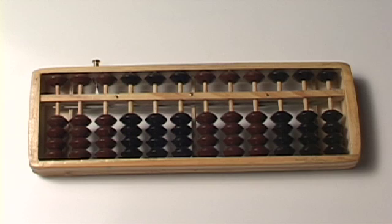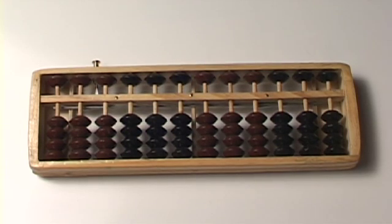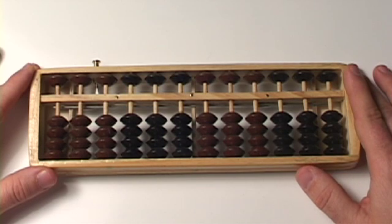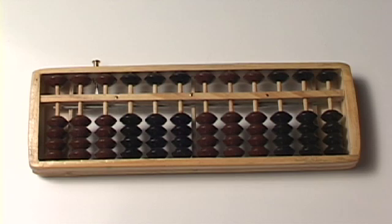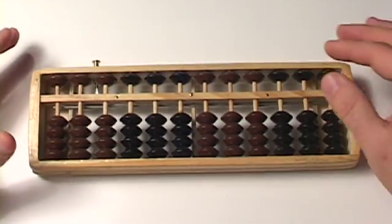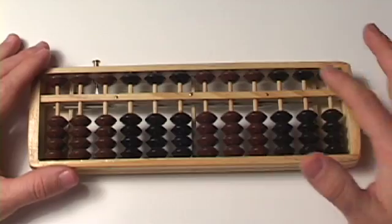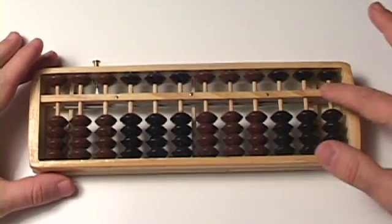So we're going almost all the way back to the first lesson in addition, and we're going to cover just basic subtraction, which is the opposite of addition. When we added something, right now the abacus says zero because there's nothing touching the center bar.